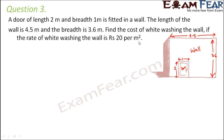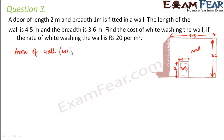When whitewashing the wall, we don't whitewash the entire area because the area of the wall as a rectangle includes the door. The door will not be whitewashed, so only the region excluding the door needs to be whitewashed. First, find the area of the wall including the door.